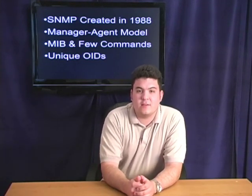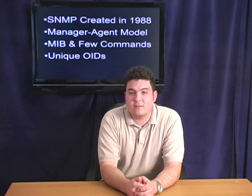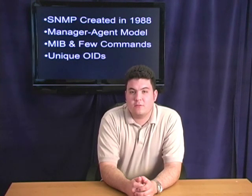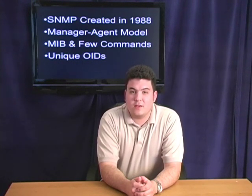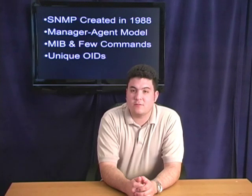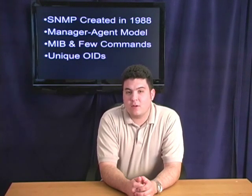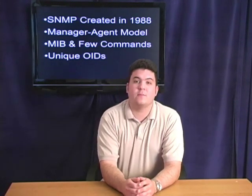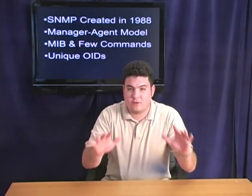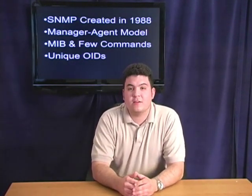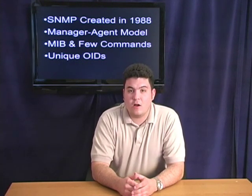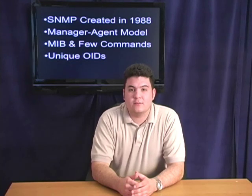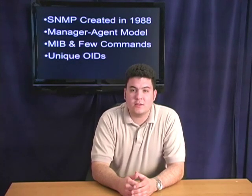The agent provides the interface between the manager and the physical devices being managed. The manager and agent use a Management Information Base, or MIB, and a relatively small set of commands to exchange information. The MIB is organized in a tree structure with individual variables, such as point status or description, being represented as leaves on the branches. A long numeric tag or object identifier, or OID, is used to distinguish each variable uniquely in the MIB and in SNMP messages.